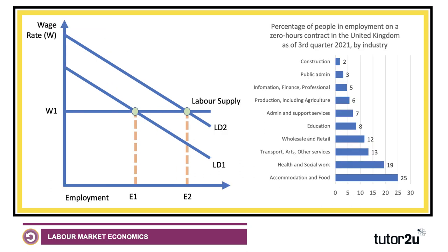Interestingly, in the UK at the end of 2021, 25% of people in work in accommodation and food sectors were on a zero hours contract — one in four, which is really high. Health and social work: 19%. Transport, the arts, other services: 13% — likely delivery drivers and similar. Wholesale and retail: 12%. Education: 8%, perhaps reflecting the rise of supply teaching, where supply teachers are not guaranteed hours each week or each month.